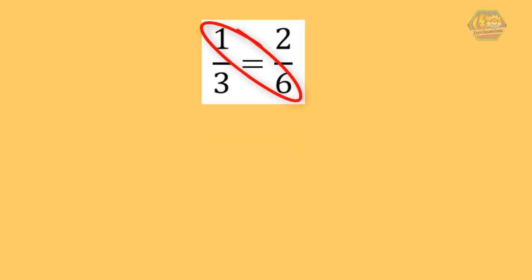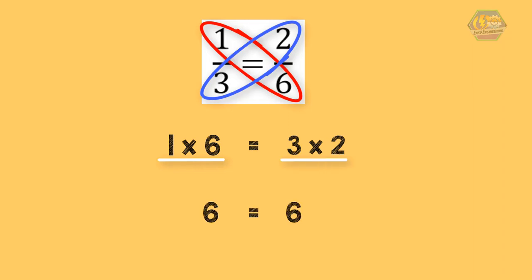The product of the extremes is equal to the product of the means. Therefore, if we multiply 1 to 6, the answer will be 6, and if we multiply 3 to 2, the answer is also 6. Therefore, the terms are proportion.